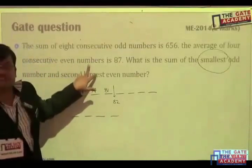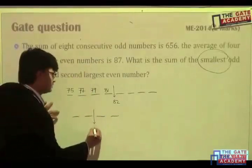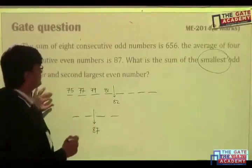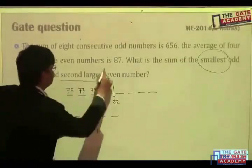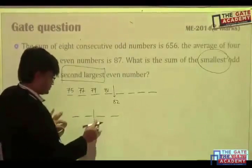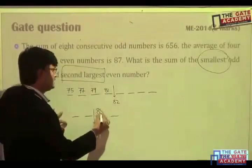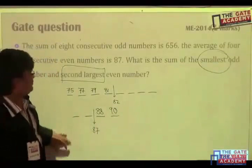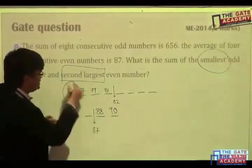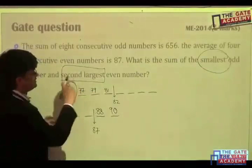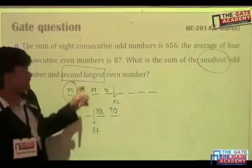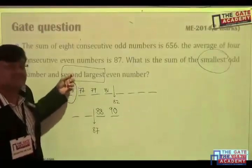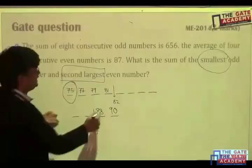Now, second series. Directly average is given. In the second series, directly average is given. 87, which is middle value. So, from the second series, what they want? Second largest. So, 87, it will be 88, 90. So, now they want answer. What is the answer? Sum of the smallest number and the second largest.